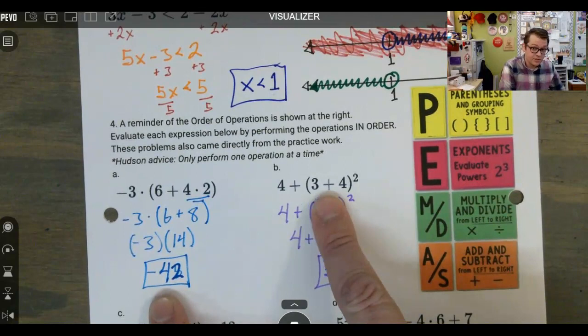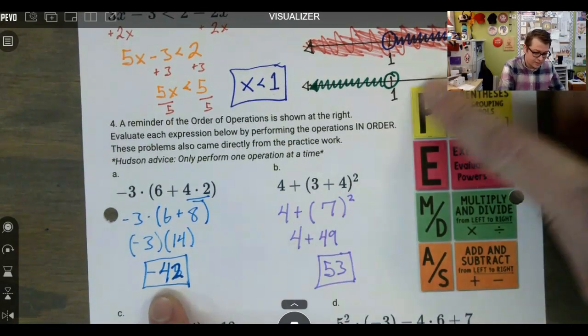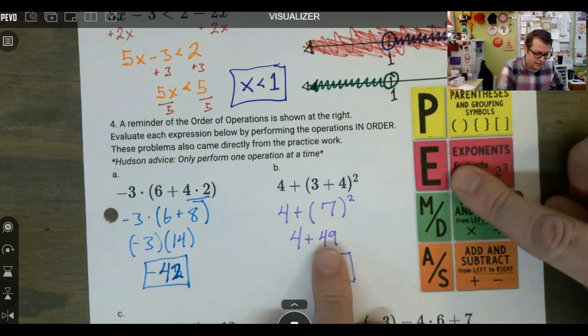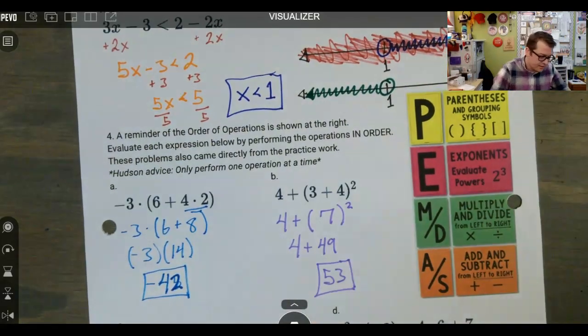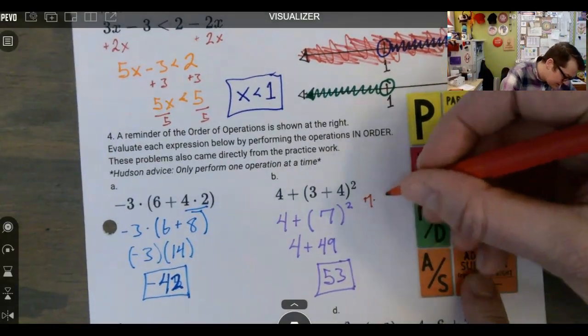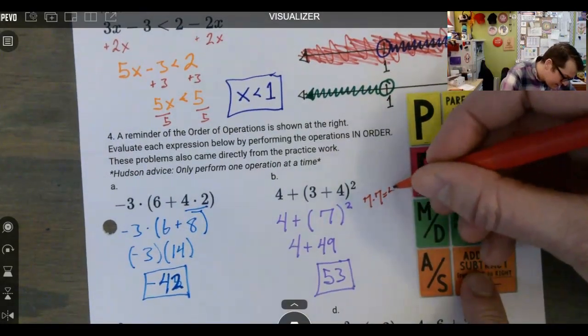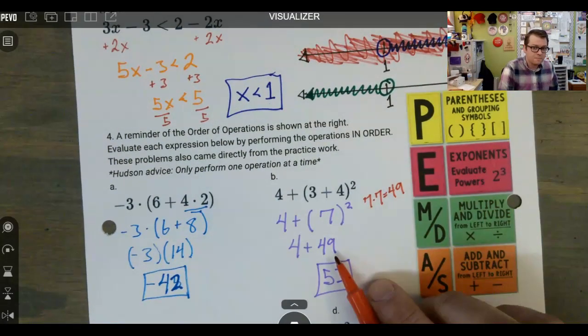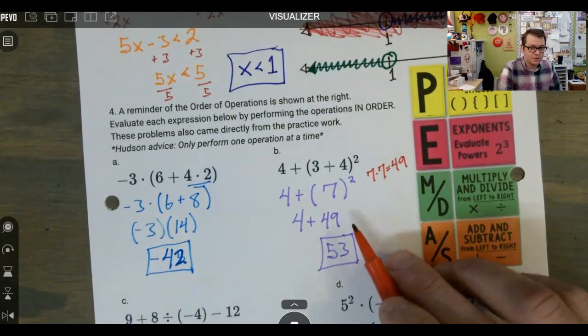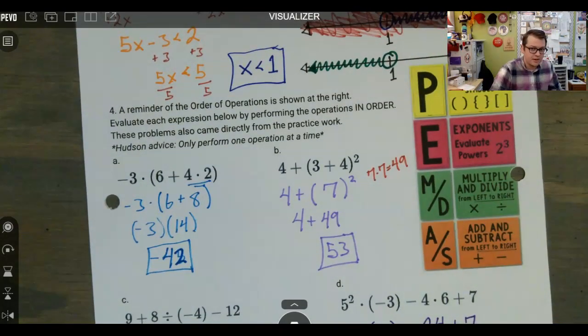In B, we start with the parentheses step by adding three plus four, right? That's the parentheses. Now we move on to exponents because there are exponents. And remember, seven squared means seven times seven. So seven times seven is 49. That's how we get that. And now we can move on to addition because there's no multiplication or division to be done.